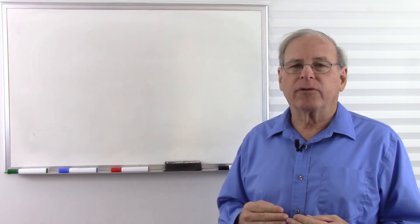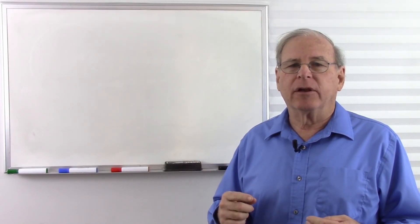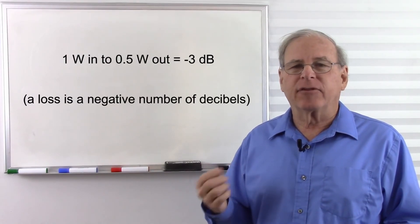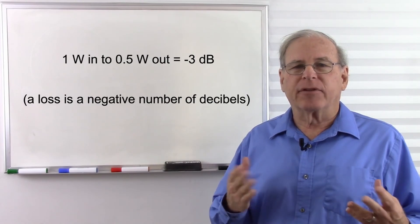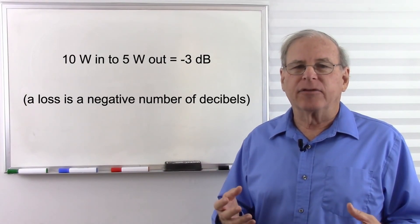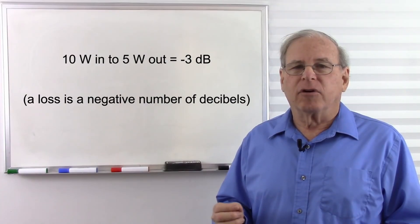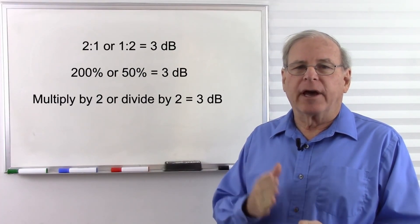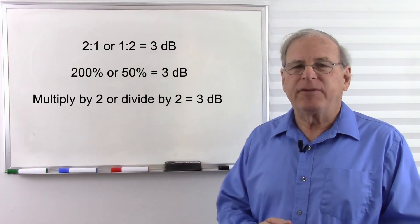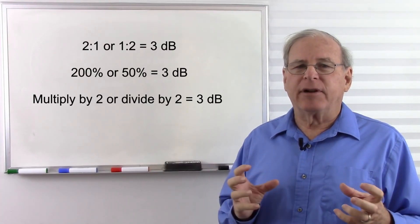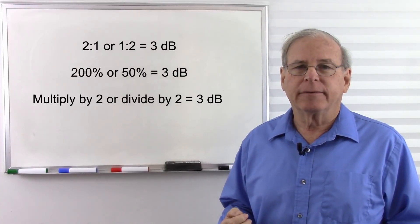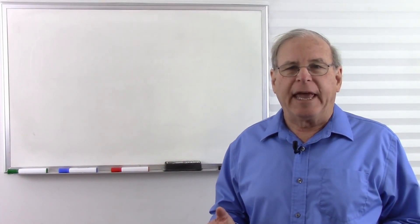An increase of 2 to 1 is always 3 decibels. A decrease in 2 to 1, so if we have an attenuator where we put 1 watt in, get half a watt out, that's a 3 decibel loss. If we have another circuit where we put 10 watts in and get 5 watts out, that is a 3 decibel loss. So if we double our input, or if we cut our input in half, if we get 200%, or 50%, or any kind of number that comes out to a 2 to 1 ratio, that is 3 decibels if we're measuring power.